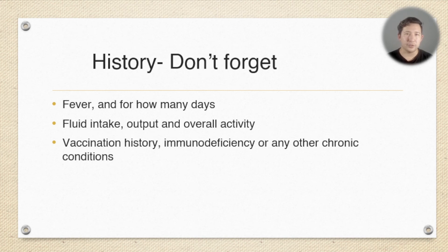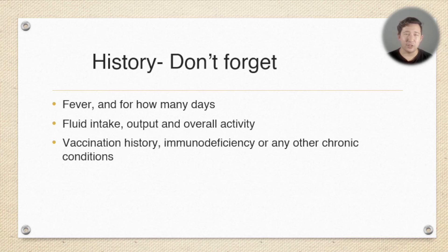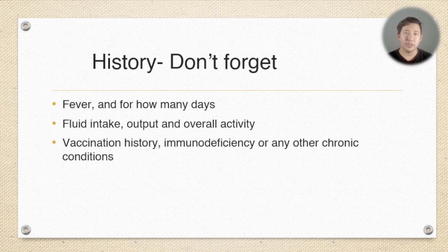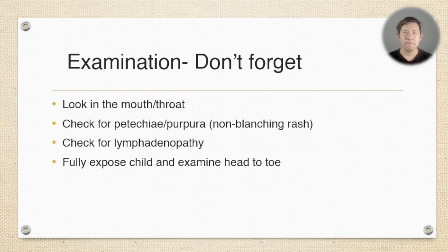As well as the normal things in your history, don't forget to specifically ask about fevers — have they got a fever, how long have they had it, and when was the fever relative to the rash in terms of timing: before, during, or after? Ask about fluid intake — are they having a normal amount? Are they making a normal amount of urine? What's the overall activity level like? Also screen for things that would make a child more susceptible to severe infections, such as their vaccination history, whether they're immunodeficient, or any chronic conditions that predispose them to complications.